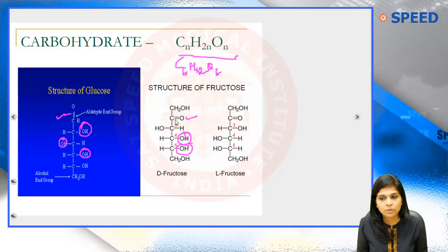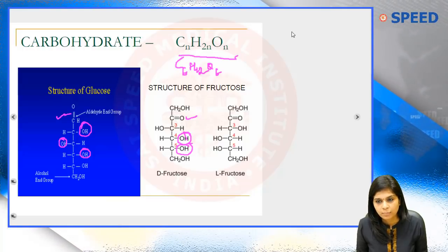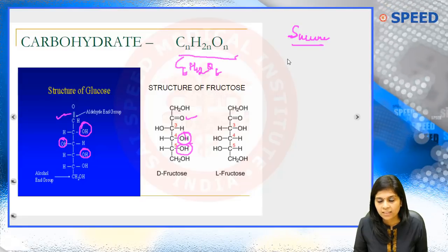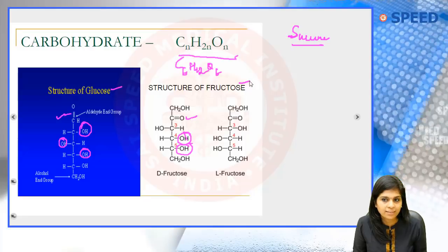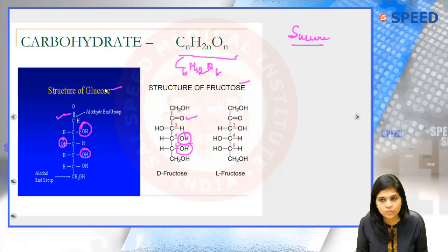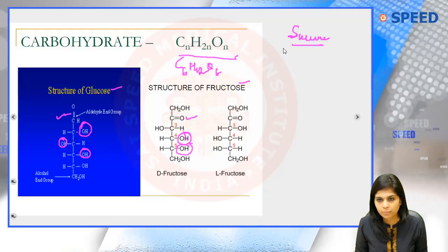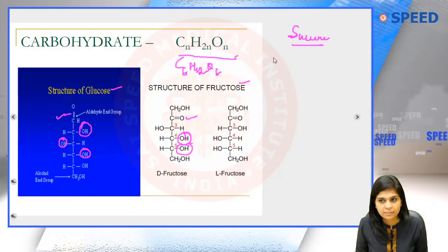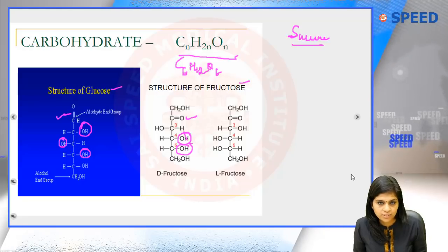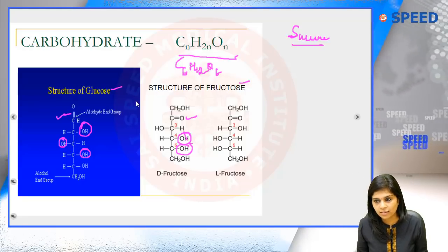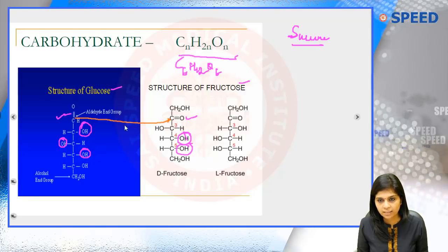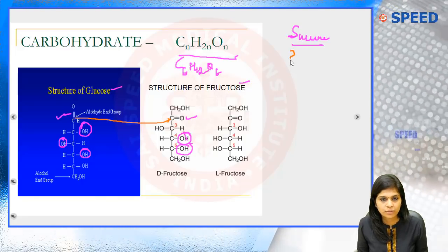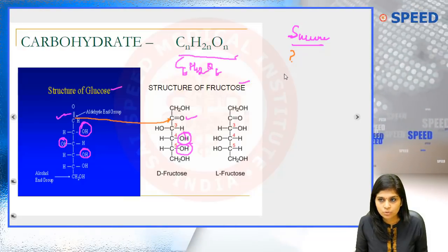But how about sucrose? Sucrose is non-reducing, in spite of being made up of two reducing sugars — glucose and fructose. Why would something made of two reducing sugars be non-reducing? The answer is that sucrose is formed by linking the first carbon atom of glucose with the second carbon atom of fructose. That way, neither the carbonyl group of glucose nor that of fructose is free.